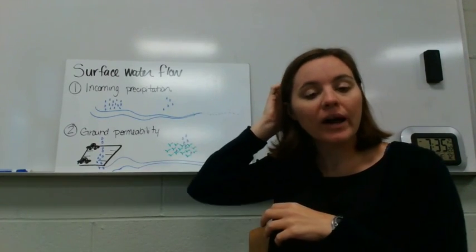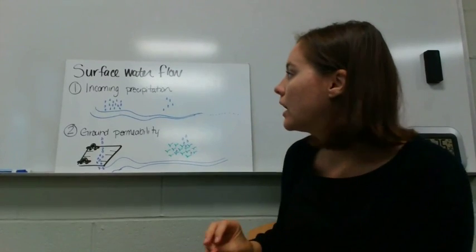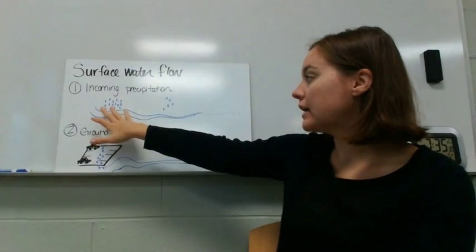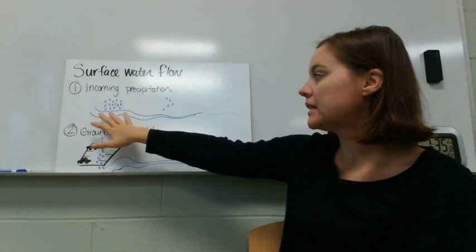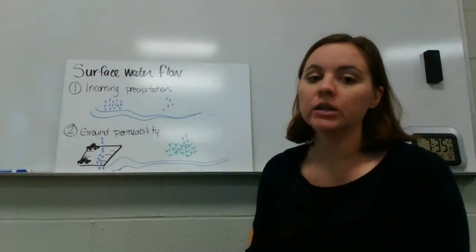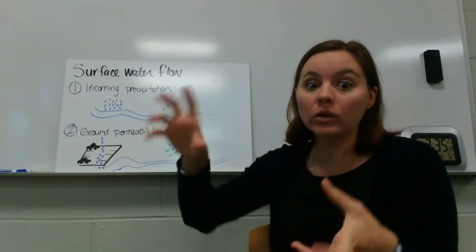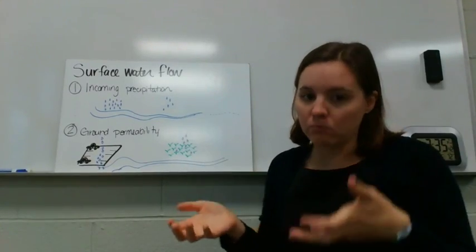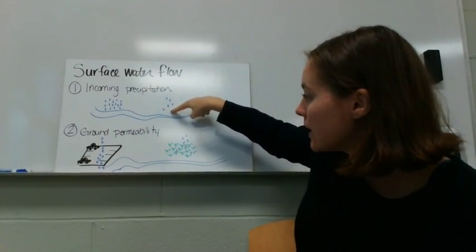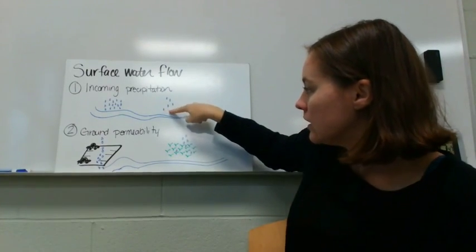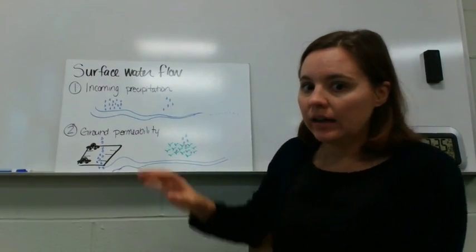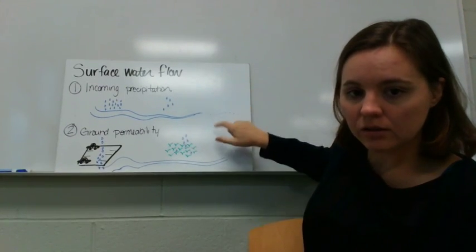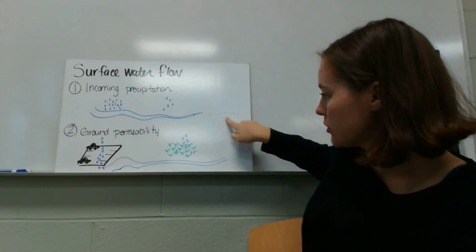So if our incoming precipitation is really really heavy, that's going to influence the volume of our surface waters. Obviously if you dump a whole lot of water into a lake or river, the water level is going to rise. You're going to get more volume. If you only dump a little tiny bit of water into it, the water level might not rise so much. And if you don't have any rain for a very long period of time, no precipitation, your stream or your lake or your river might start to get really small in volume.